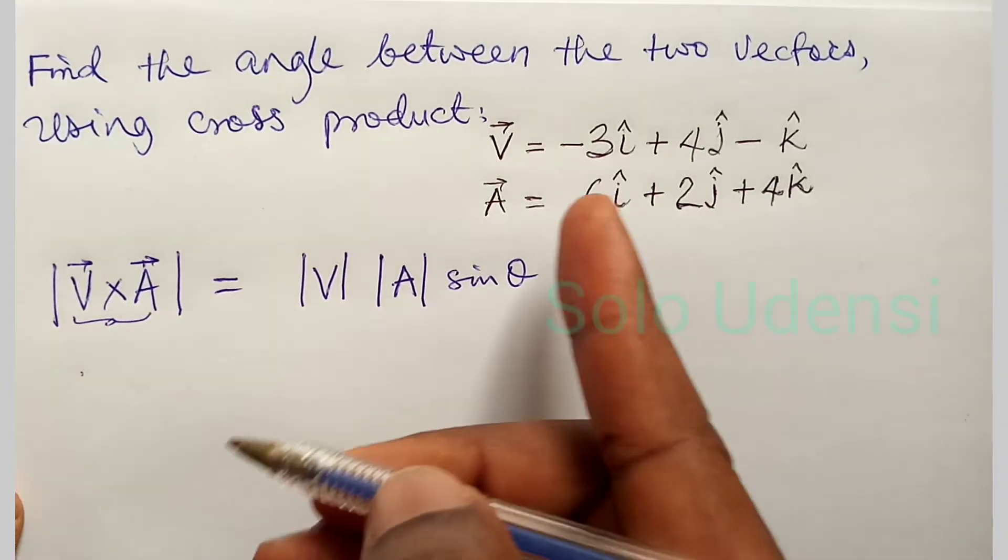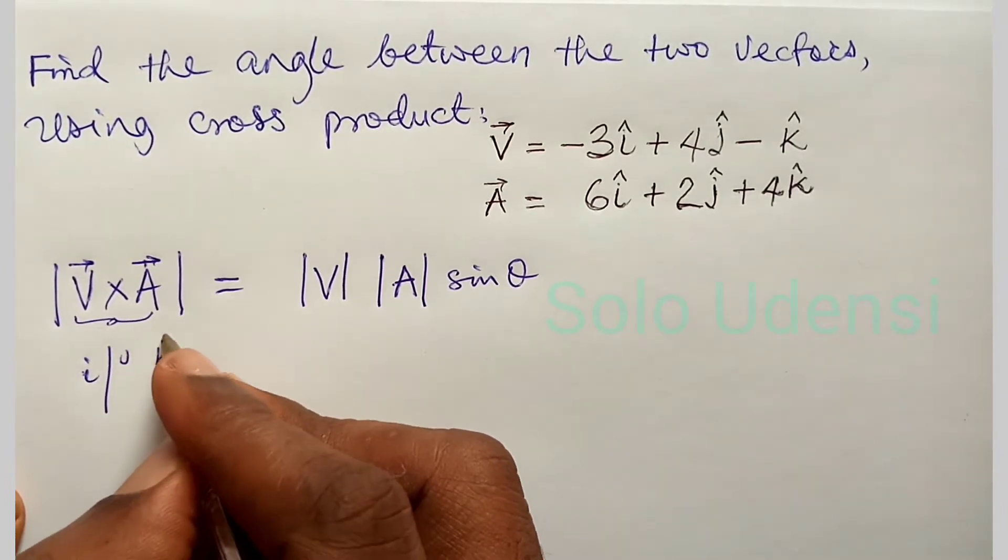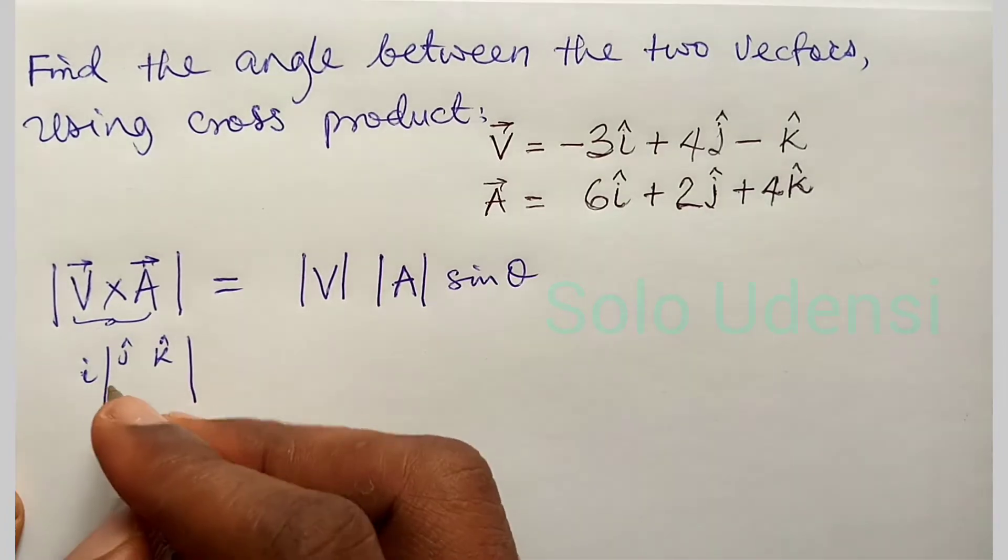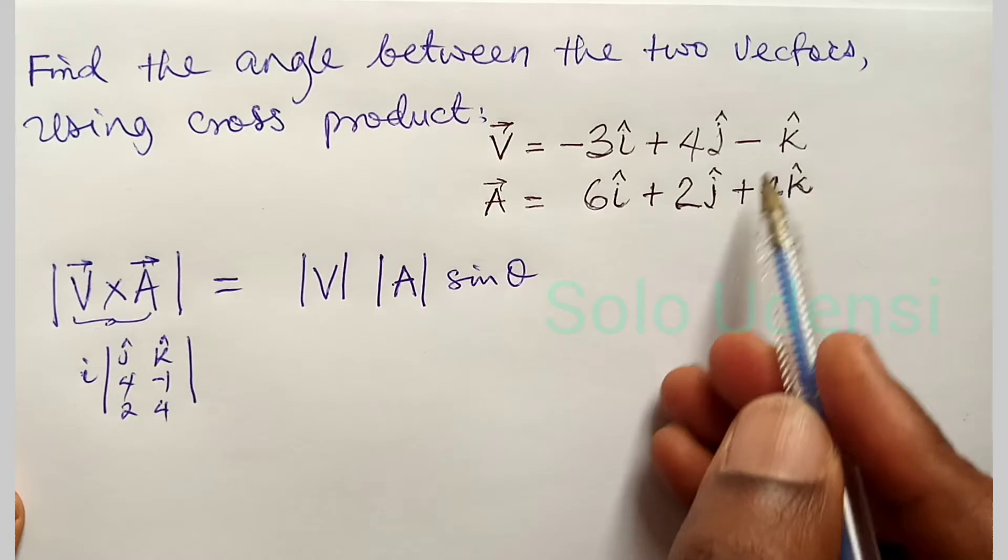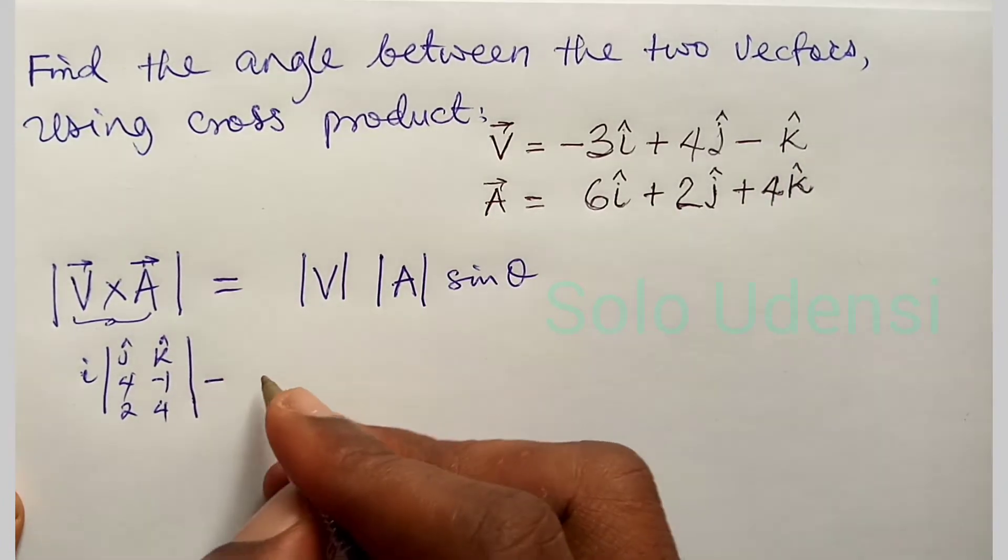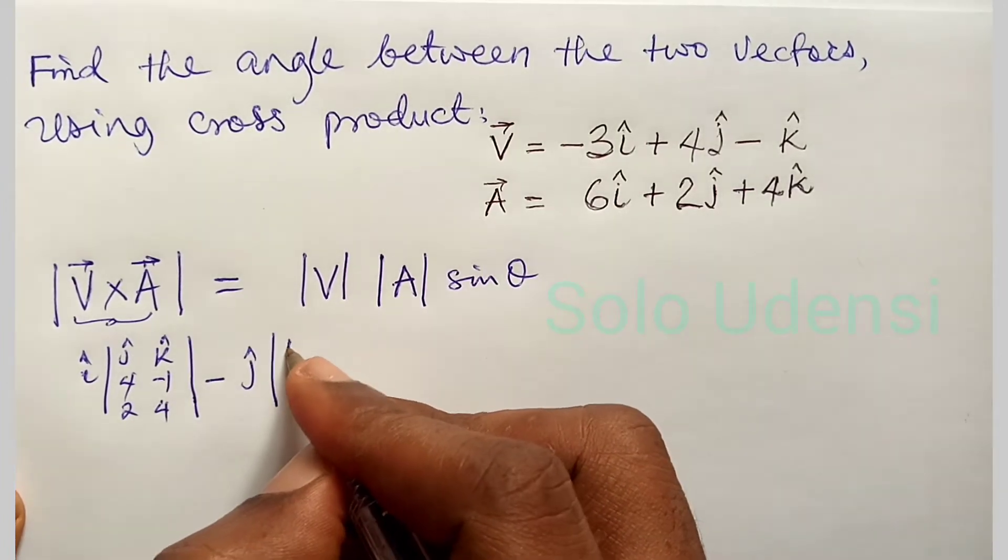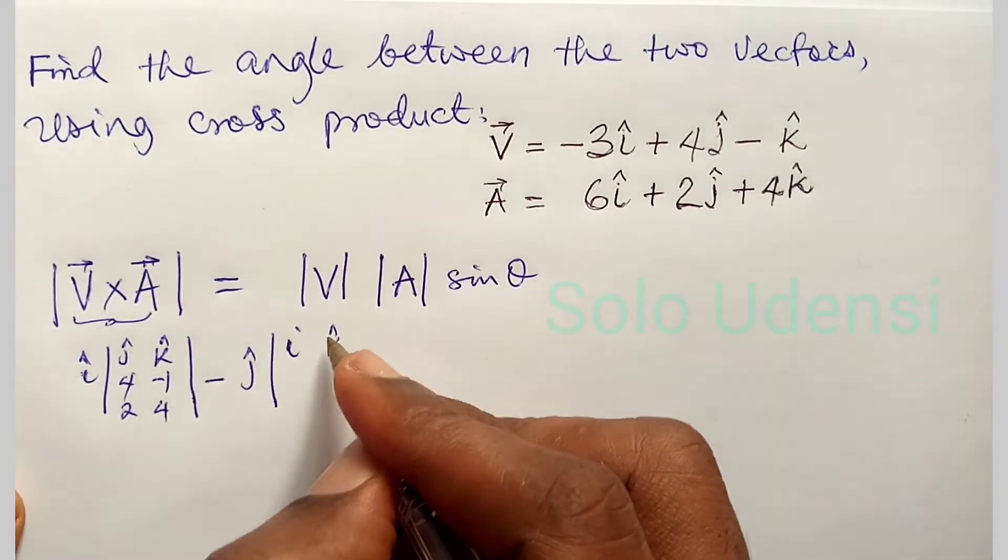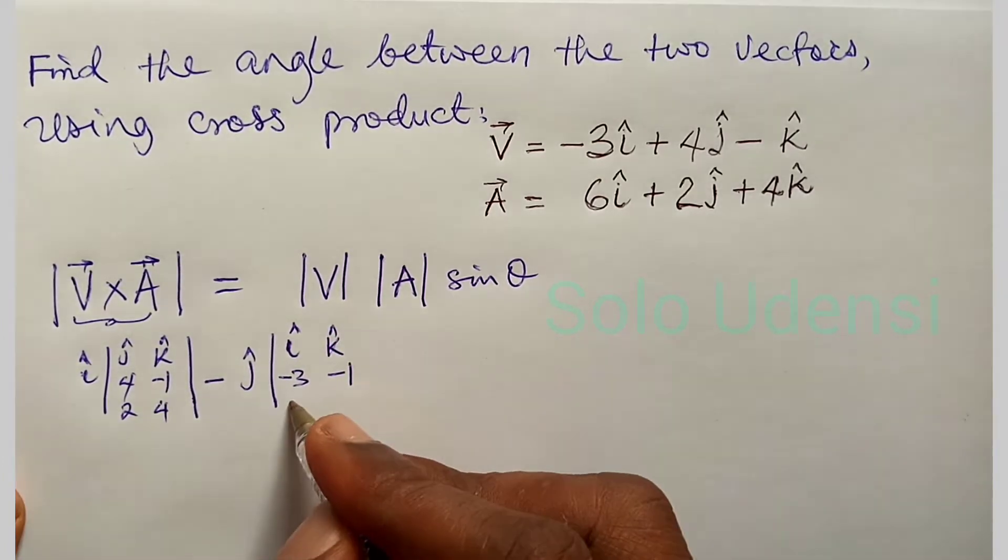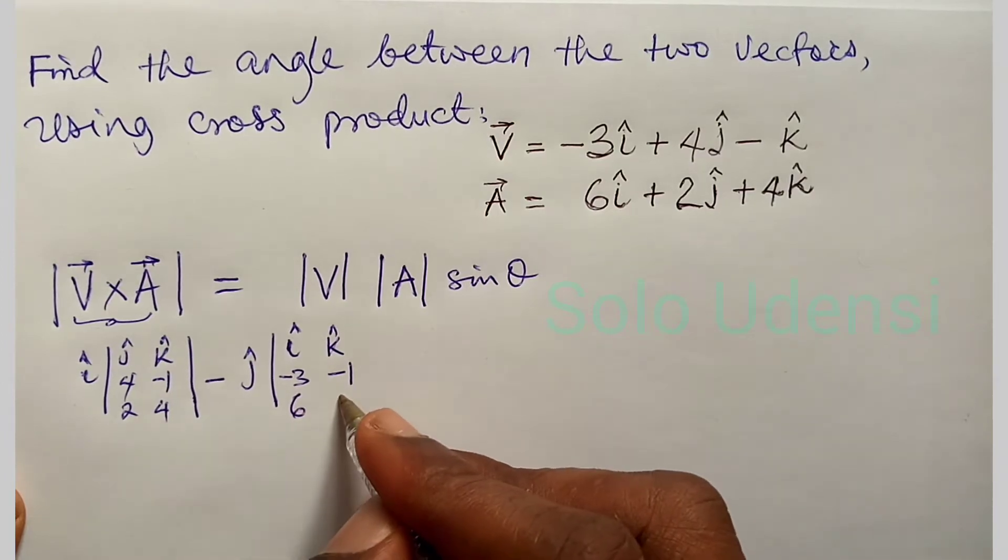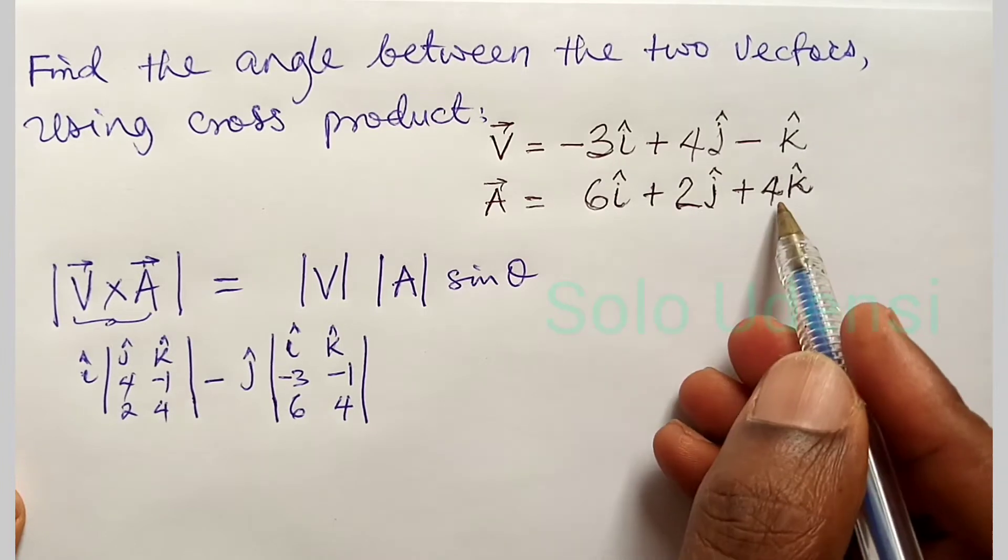i, j, k hat minus 3, 4 minus 1, 6, 2, 4 minus 1. So it will be i hat 4 minus 1, 2, 4 minus j hat, minus 3, minus 1, 6, 4. Minus 3, minus 1, 6, 4.